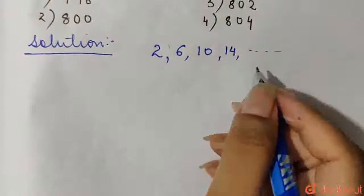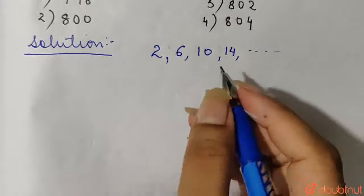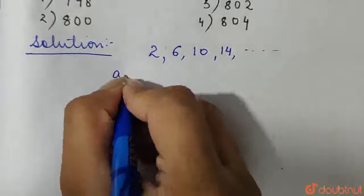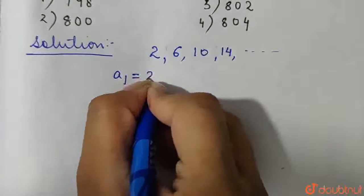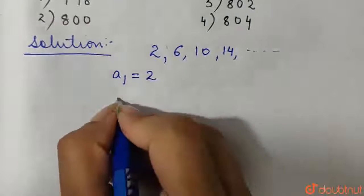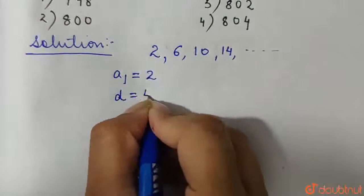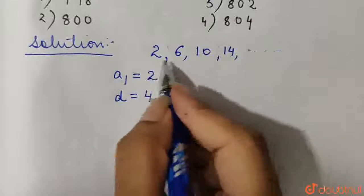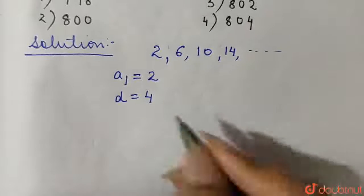So this sequence forms an arithmetic progression where a1, that is the first term, is 2 and the common difference d is 4 because every successive term differs by 4.